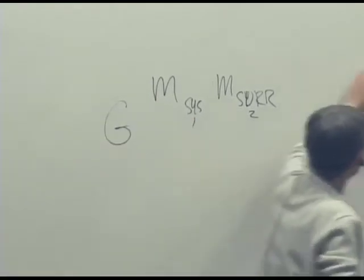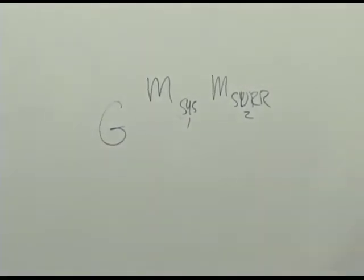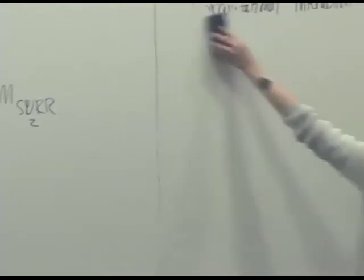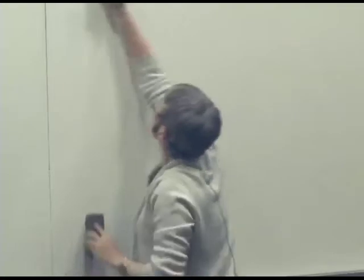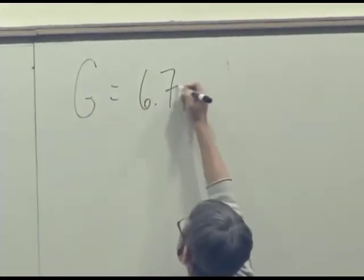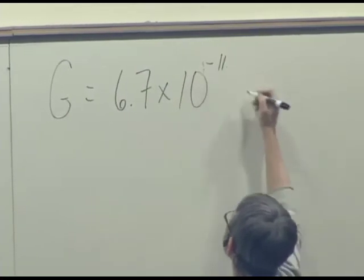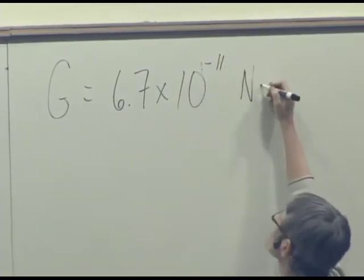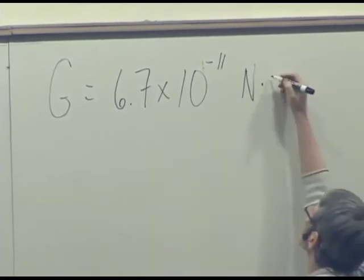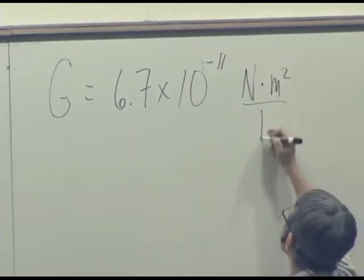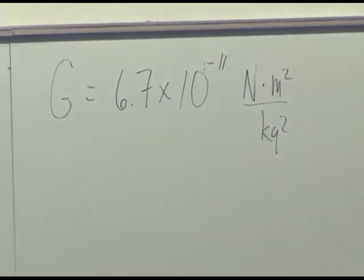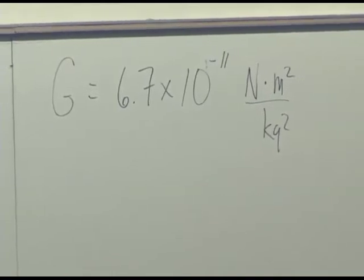And it has the value, this is capital G not little g, and it has the value 6.7 times 10 to the negative 11 newtons, newton meters squared per kilogram squared. All these constants are in the back of the textbook and they'll be given to you on tests.